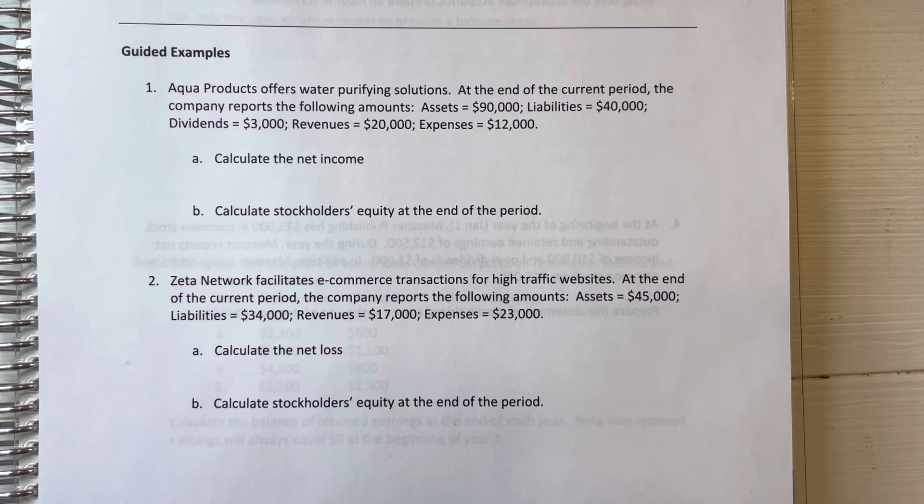Aqua Products offers water purifying solutions. At the end of the current period, the company reports the following amounts: Assets, $90,000; Liabilities, $40,000; Dividends, $3,000; Revenues, $20,000; and Expenses, $12,000.